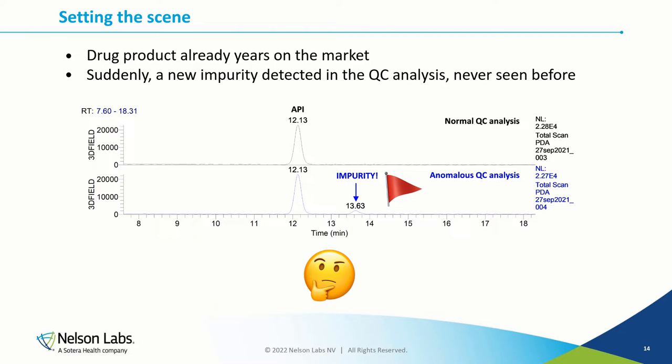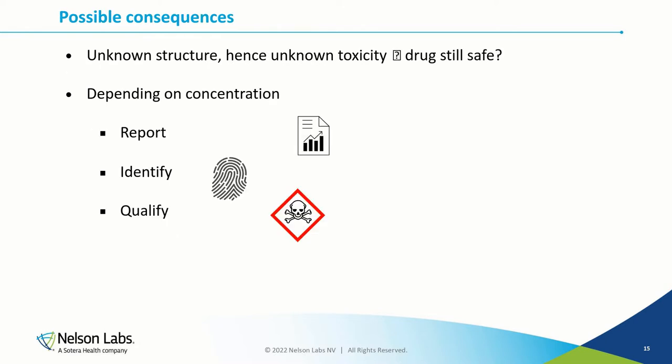The context is straightforward. We will talk about drugs that are already years on the market and suddenly a new impurity is detected in the QC analysis. As you can see on this example on the slide, for years you have a normal QC analysis appearing as the black LC-UV chromatogram on the top, and suddenly you encounter an impurity never seen before, obviously causing a red flag. It's an out-of-specification result and the batch is on hold, actions need to be defined, root cause analysis is started, and so on.